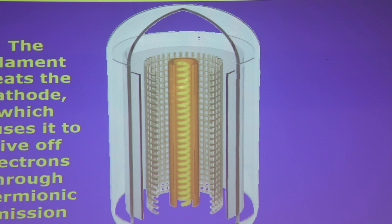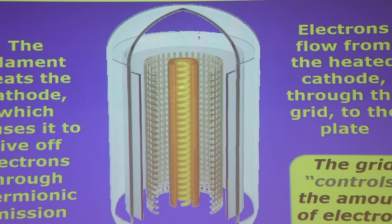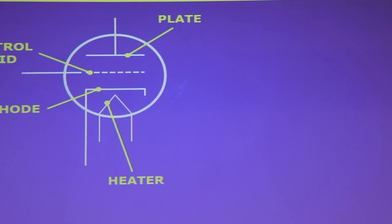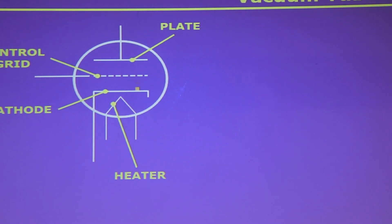The filament heats the cathode, which causes it to give off electrons. The electrons flow through the grid structure to the plate. Depending on the voltage on the grid controls how much of those electrons get through. So you can vary the rate of electrons going from the cathode to the plate by changing the voltage — the potential — on the grid.